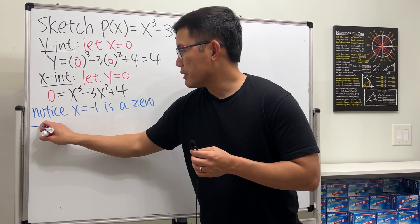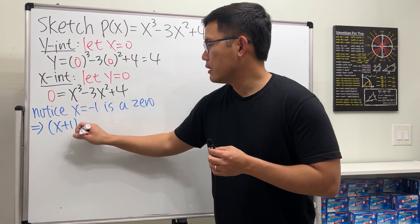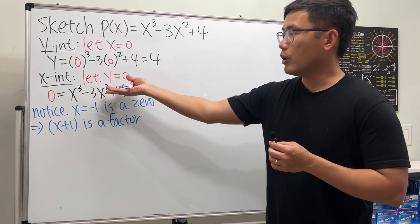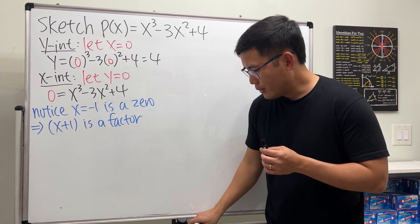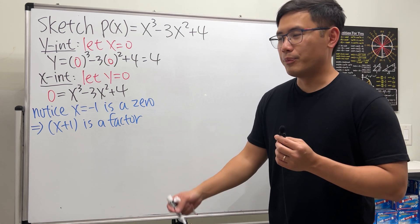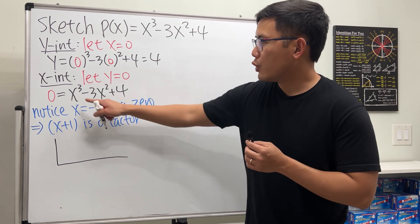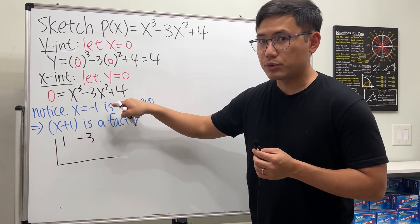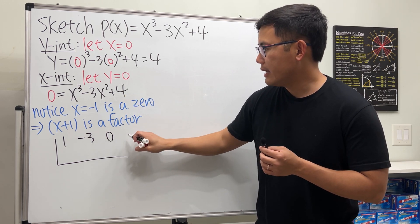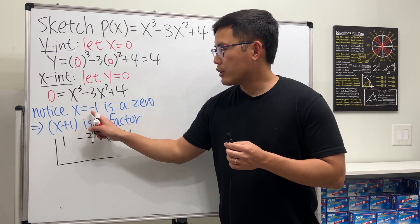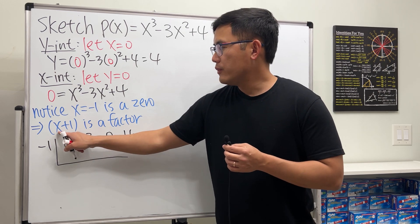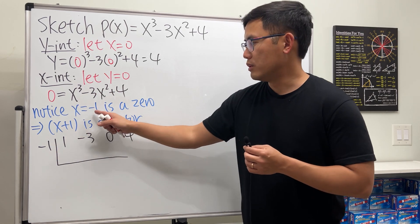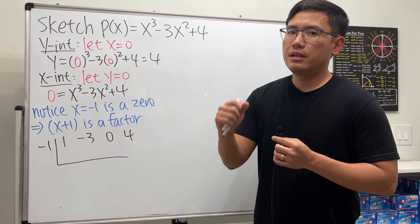Since x = -1 is a zero, that means x + 1 is a factor of the polynomial. This is huge because now we can do synthetic division to break it apart. Write down the coefficients: 1, -3, 0 (placeholder for the missing x term), and 4. We place -1 for the synthetic division.